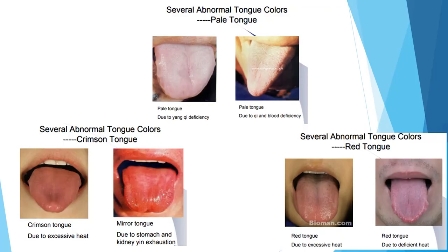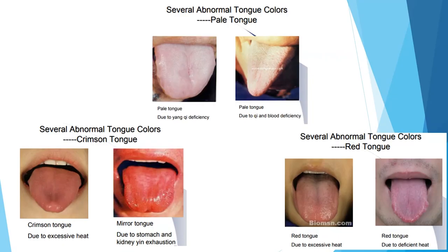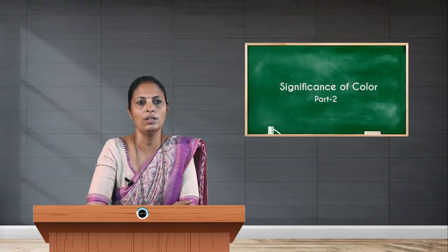Examples include: a pale tongue due to yang deficiency, a pale tongue due to chi and blood deficiency, a crimson red tongue due to excess heat, a mirror tongue representing stomach and kidney exhaustion, and red tongues due to either excess or deficient heat. We can determine excess or deficiency depending on the moisture, color combination, and whether the coating is thick or thin. This part will be continued in the next session.